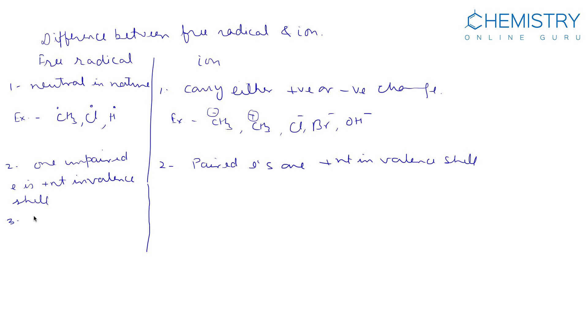Due to presence of unpaired electron, free radicals are paramagnetic in nature. Ions are diamagnetic. Free radicals are formed by homolytic fission. Ions are formed by heterolytic fission of covalent bond.